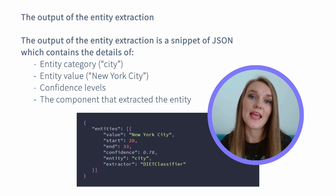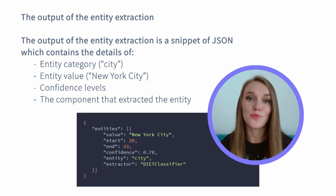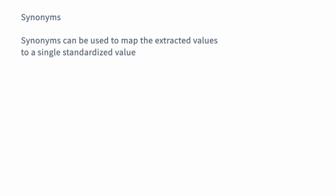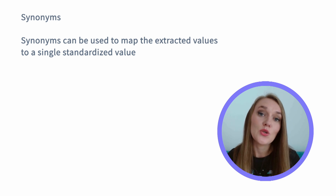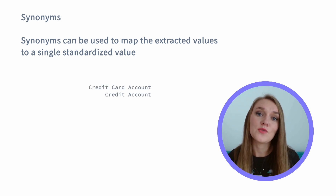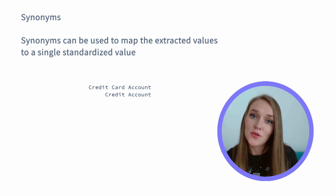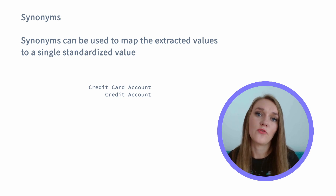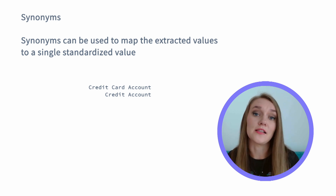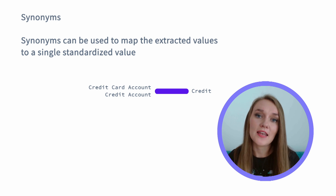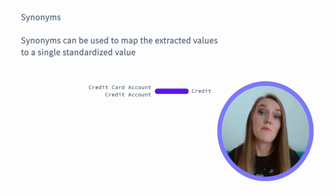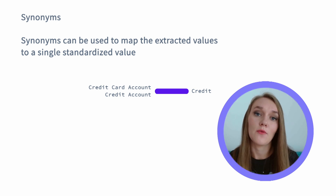In addition to just extracting entities, Rasa comes with a few additional features that can help you enhance entity extraction even more. The first one is called synonyms. Synonyms allow you to map an extracted entity value to a value different than the one extracted. In some cases, users will refer to the same thing using lots of different terms. But as a developer, you will want to use the values of the entities for querying a database, making API calls, or using those details for something else. This means that you will need the extracted entity values to be normalized and mapped under one specific value, and this is exactly what you can achieve with synonyms.